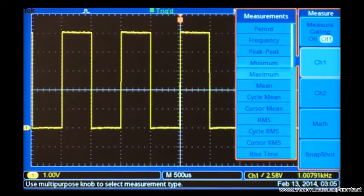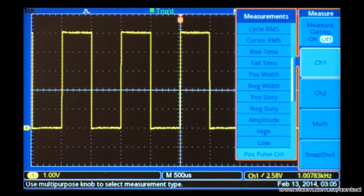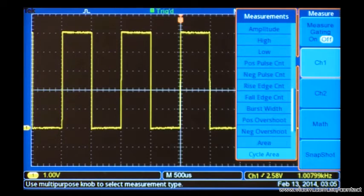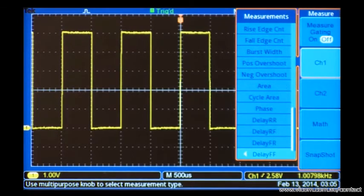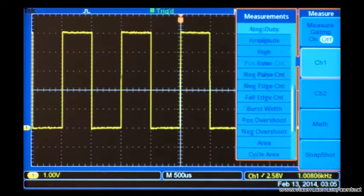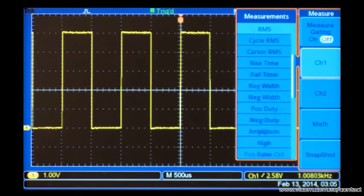Automatic measurements use the scope's processing power to perform calculations on digitized waveforms. There are 34 measurements available on the TBS-1000B oscilloscopes, going well beyond the simple delta-T and delta-V measurements we've just made with the cursors.